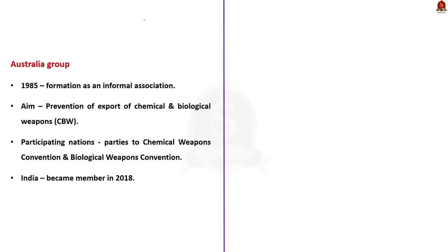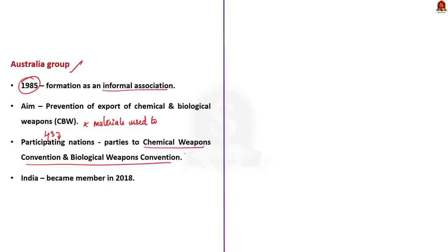The Australia Group is an informal association formed in 1985. It aims to prevent the export of chemical and biological weapons and the materials used to produce them. The Australia Group consists of 43 participating nations. All states participating are parties to the Chemical Weapons Convention and Biological Weapons Convention. India became a member of the Australia Group in 2018.